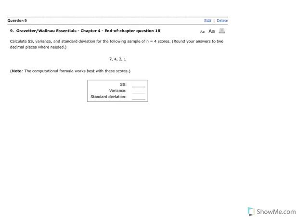Here's the solution to number 9 of chapter 4. We're asked to find the sum of squared deviations, variance, and standard deviation for these four scores. So it's a sample of four scores.